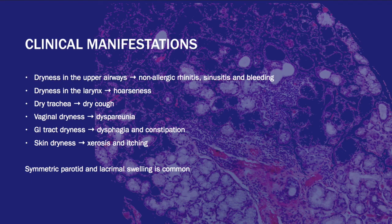Normally we produce 1 to 1.5 liters of saliva a day; however, in Sjögren's patients, that decreases to less than 50%. Sjögren's Syndrome can cause dryness in the upper airways, manifested as non-allergic rhinitis, sinusitis, and bleeding. It can cause dryness in the larynx causing hoarseness, dryness in the trachea causing dry cough, vaginal dryness causing dyspareunia, GI tract dryness causing dysphagia and constipation, and it also affects the skin causing itching. It also presents as symmetric parotid and lacrimal swelling, which is common.